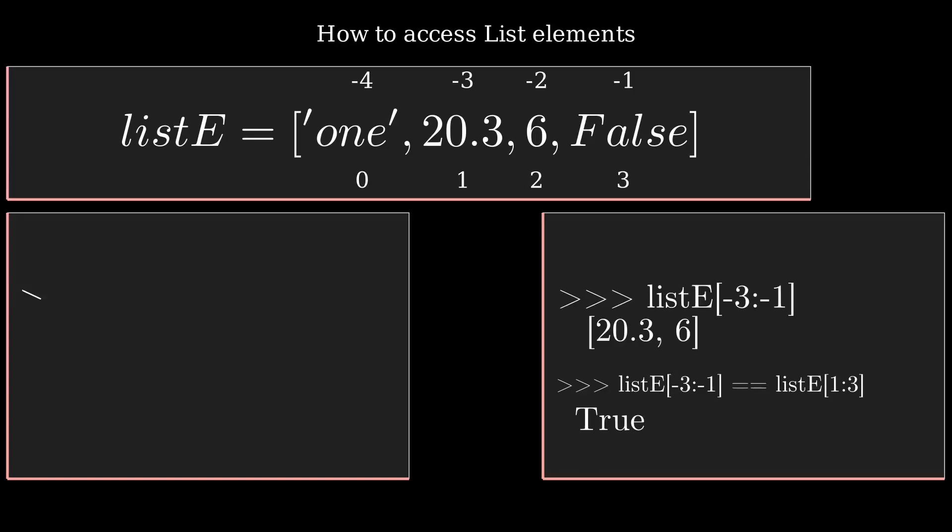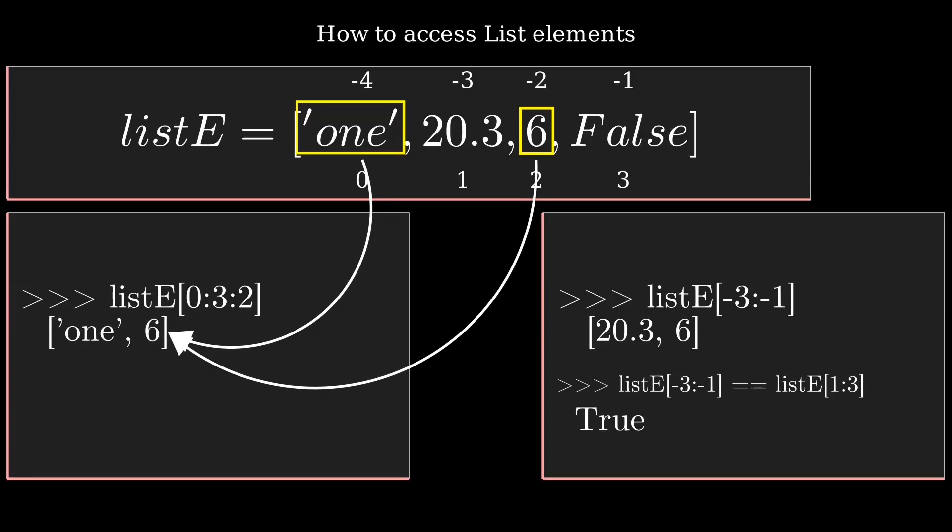Sometimes you want to skip elements from the list. If you want to skip element 20.3 from listE, you can use the stride: 0:3:2. The two at the end is known as stride, and if you use that, it will skip the element 20.3.